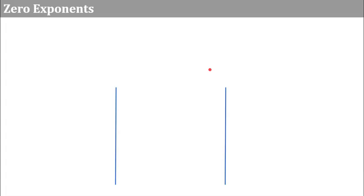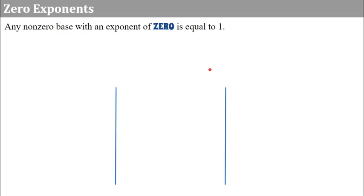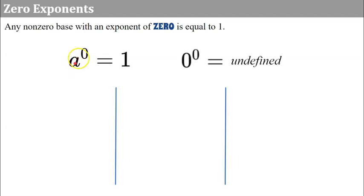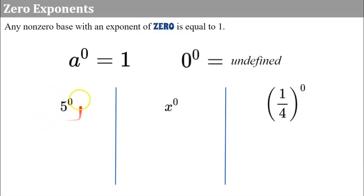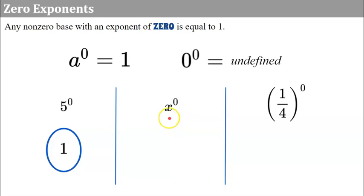Let's begin with zero exponents. Any non-zero base with an exponent of zero is equal to one. Any power with an exponent of zero is equal to one, except zero — zero to an exponent of zero is undefined; you cannot take nothing and make it one. For example, five to the zero is equal to one. X to the zero is one, and one-fourth to the zero is also one.